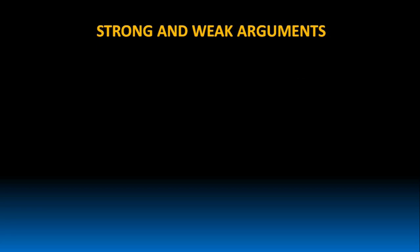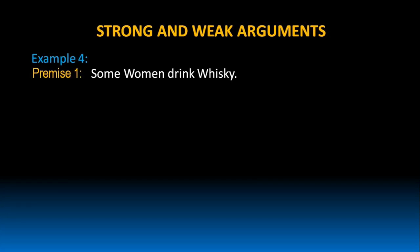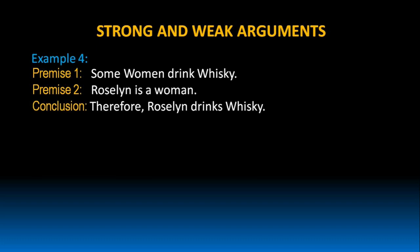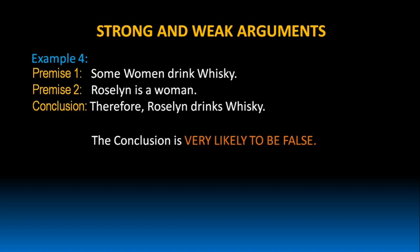Let us try to understand these things with the help of few more examples. Some women drink whiskey. Rosaline is a woman. Therefore, Rosaline drinks whiskey. In this argument, the conclusion is very likely to be false. Why do I say the conclusion in this argument is very likely to be false? Because Premise 1 says, 'some women drink whiskey.'